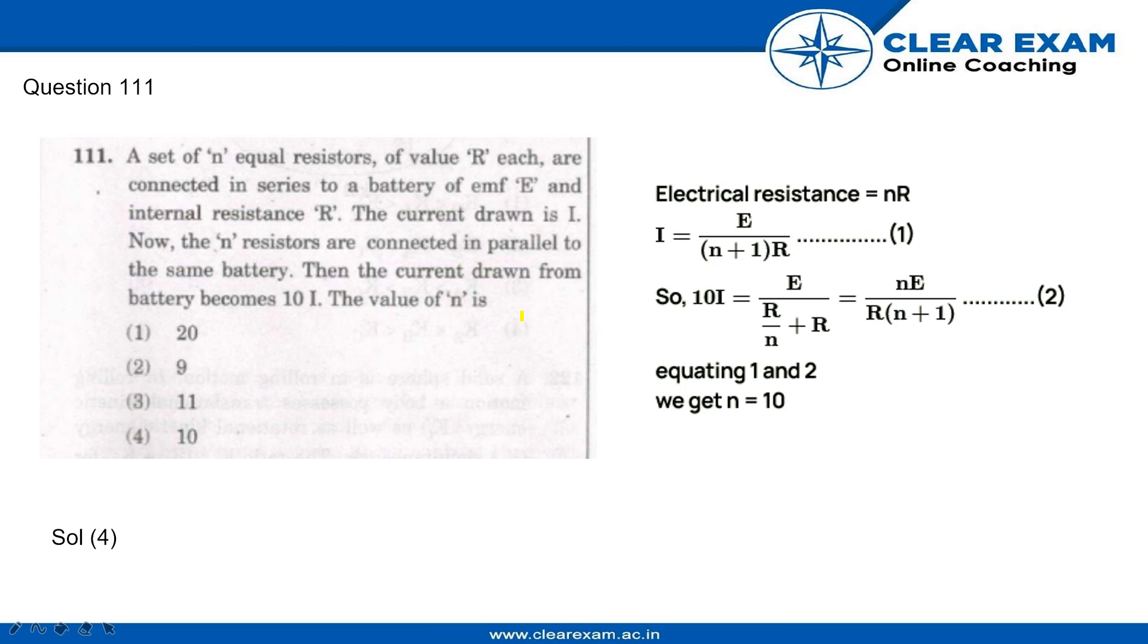The value of N is: 1, 20, 2, 9, 3, 11, or 4, 10. So the electrical resistance is N into R and the value of I is E upon N plus 1 into R, which is equation number 1.